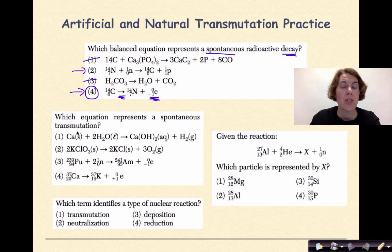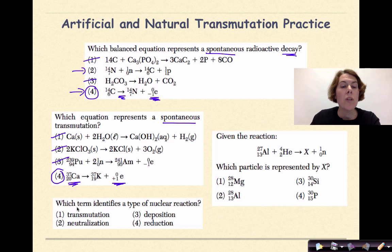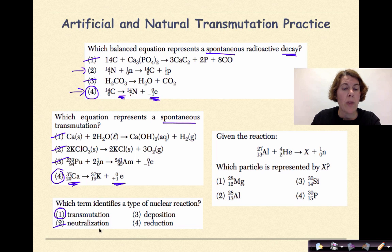Next question: which equation represents spontaneous transmutation? Again, 'spontaneous' means a decay reaction. Options one and two are chemical reactions — out. Option three is out because plutonium-239 is being bombarded with multiple neutrons forming americium-241 and releasing a beta particle. The correct answer is four: calcium-37 undergoes decay to form potassium-37 and a positron. The term that identifies a type of nuclear reaction is 'transmutation' — neutralization relates to acid-base reactions, deposition to phase change, and reduction to redox.